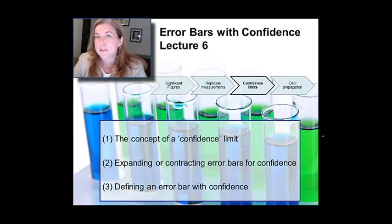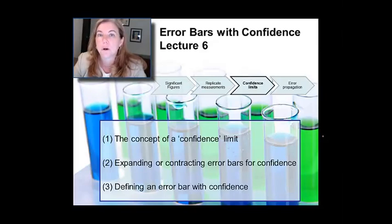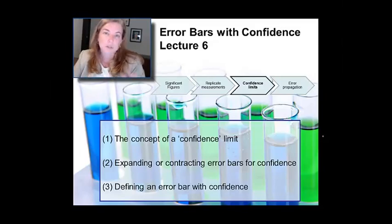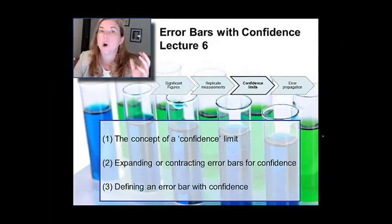In the last module, we learned that if you just take the standard deviation of a set of replicate measurements, then you can use the standard deviation as your error bar, or your plus-minus description of random error. But there's something really limiting about that — you can't really control how tight your error bar is.